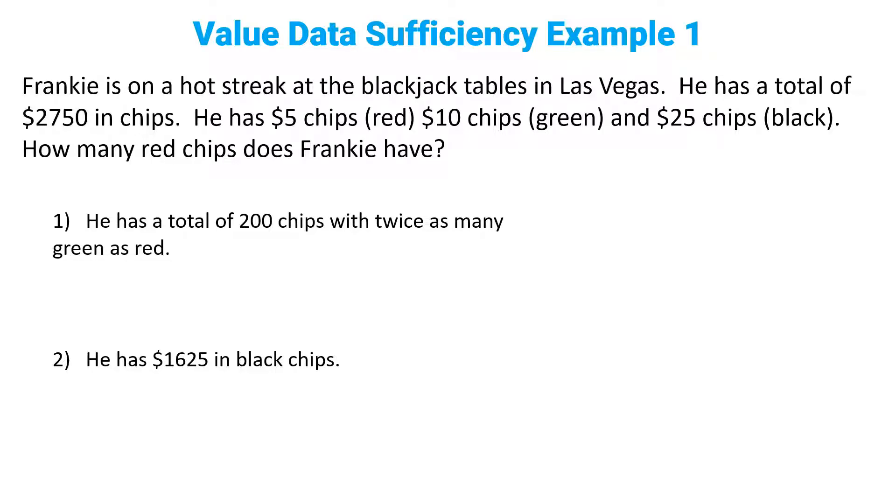Okay, let's move on to that example. Frankie is on a hot streak at the blackjack tables in Las Vegas. He has a total of $2,750 in chips. He has $5 chips (red), $10 chips (green), and $25 chips (black). How many red chips does Frankie have?